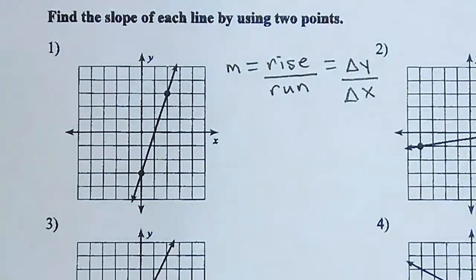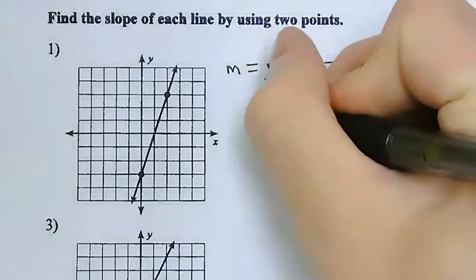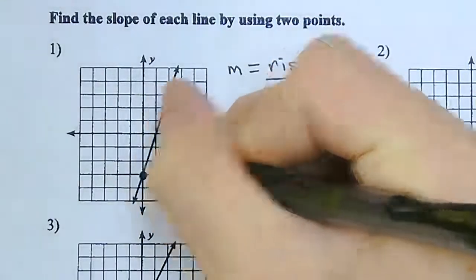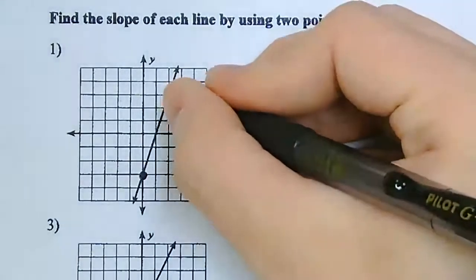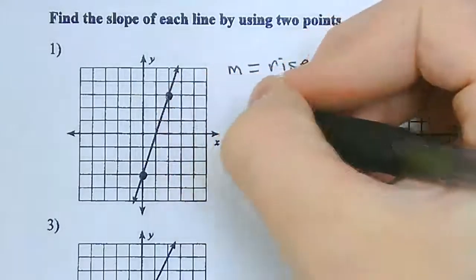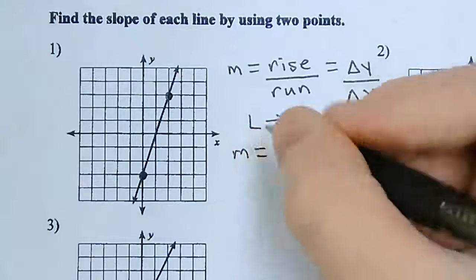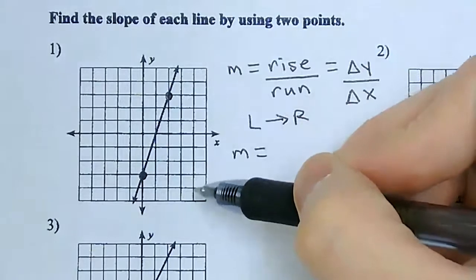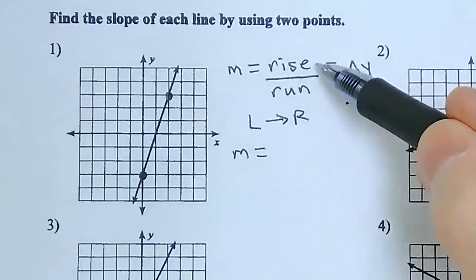When doing this from a graph, I'm taking two points and I always want to go from left to right. I'm going to choose this point on the left as my starting point and go all the way to the point up here as my end point. I want to know how far up I need to go to get from the bottom point to the top point, and then count how far to the right I need to go.